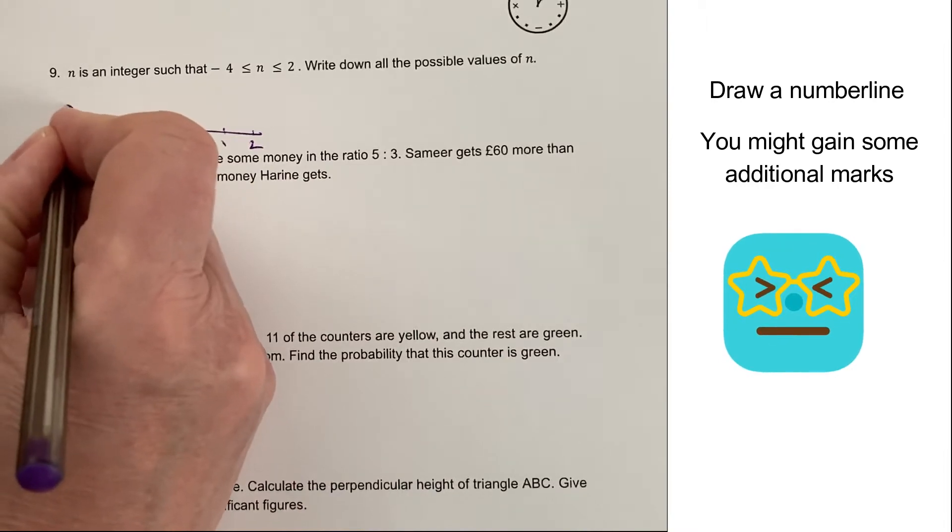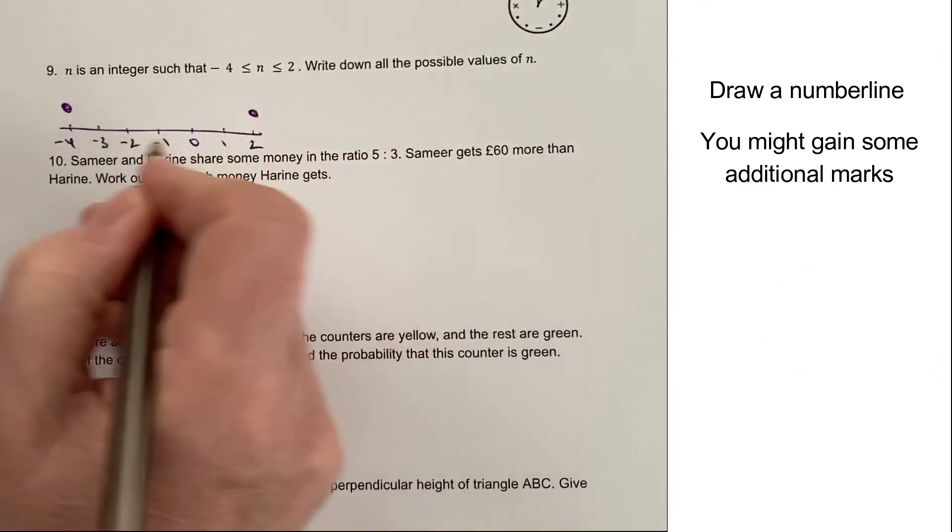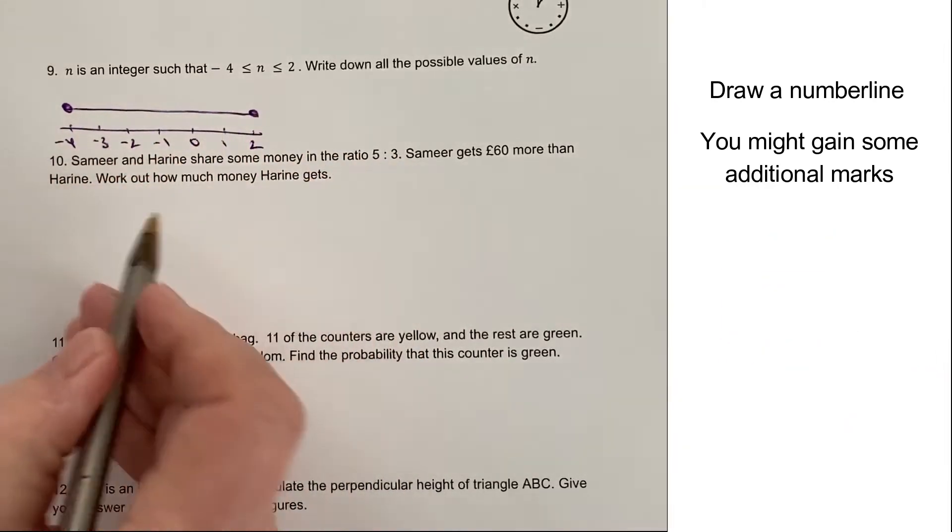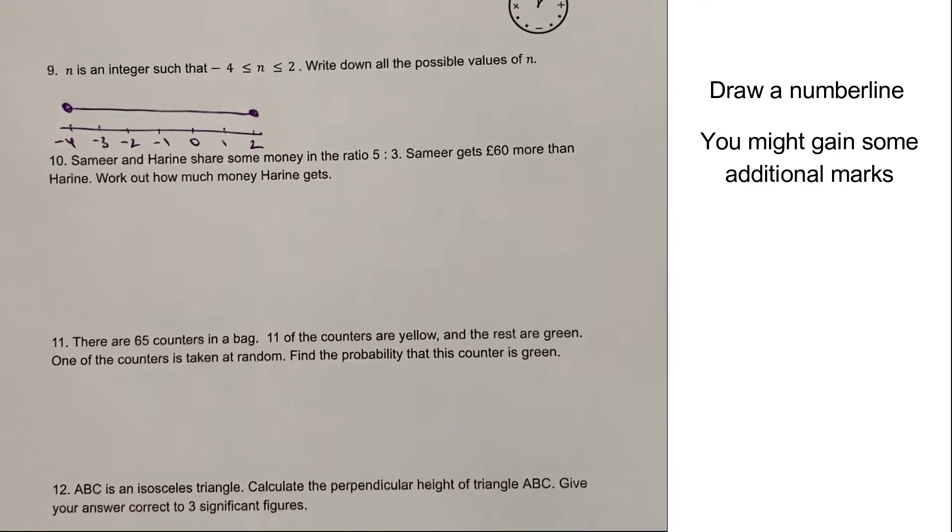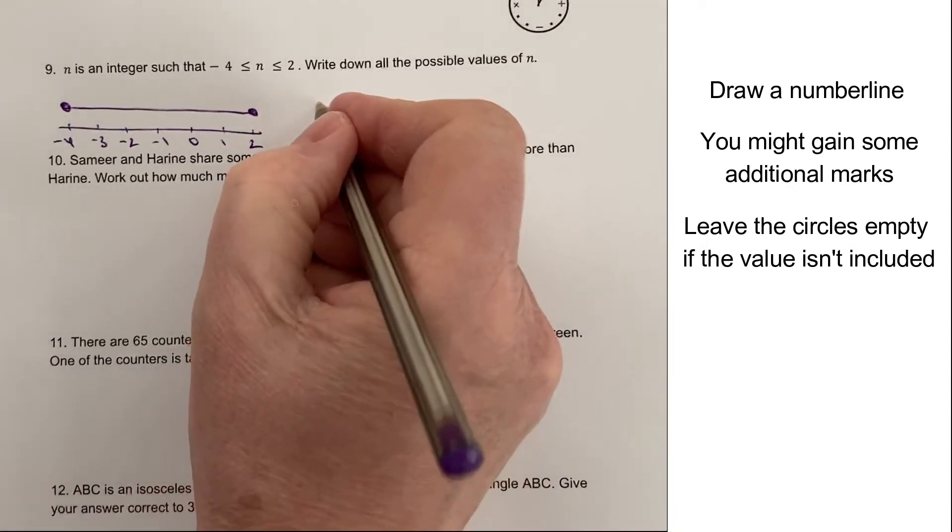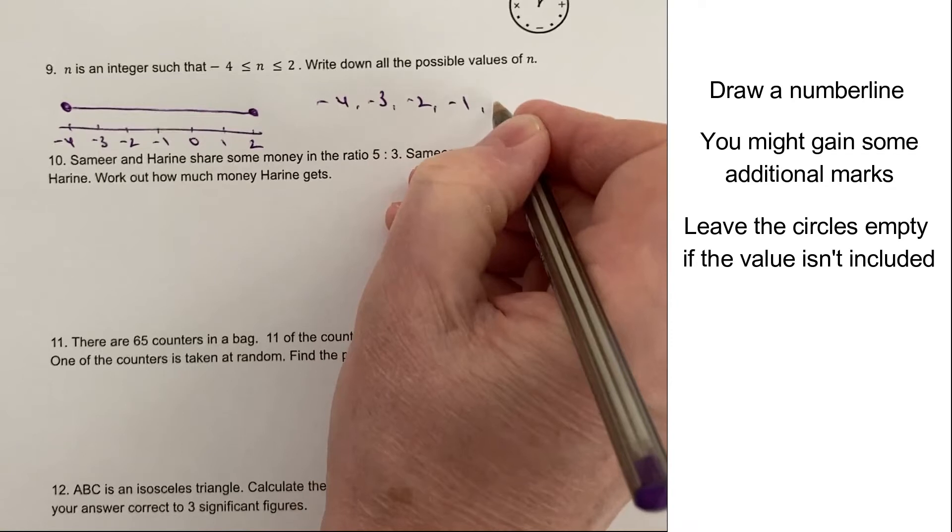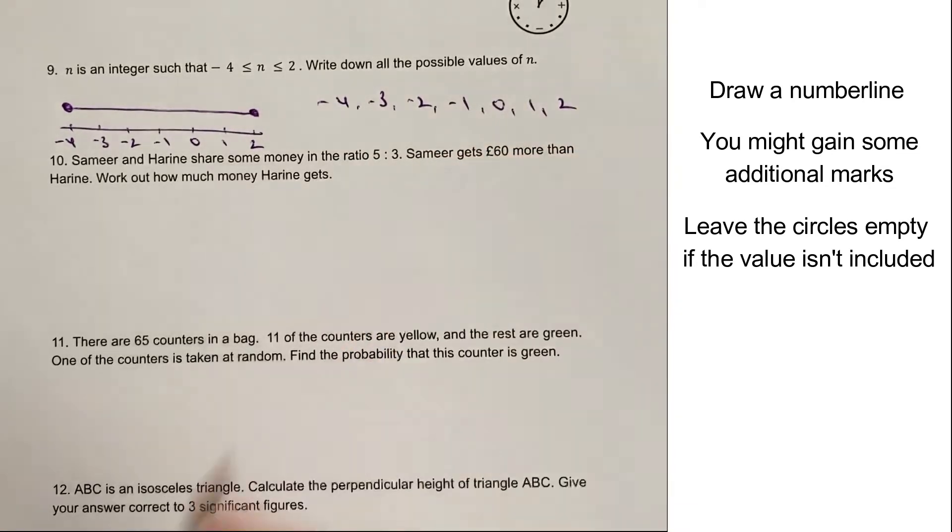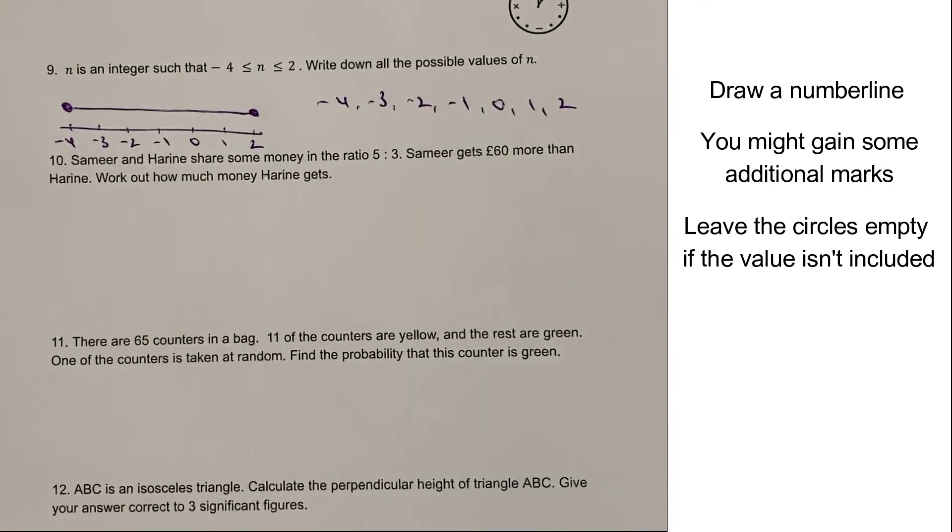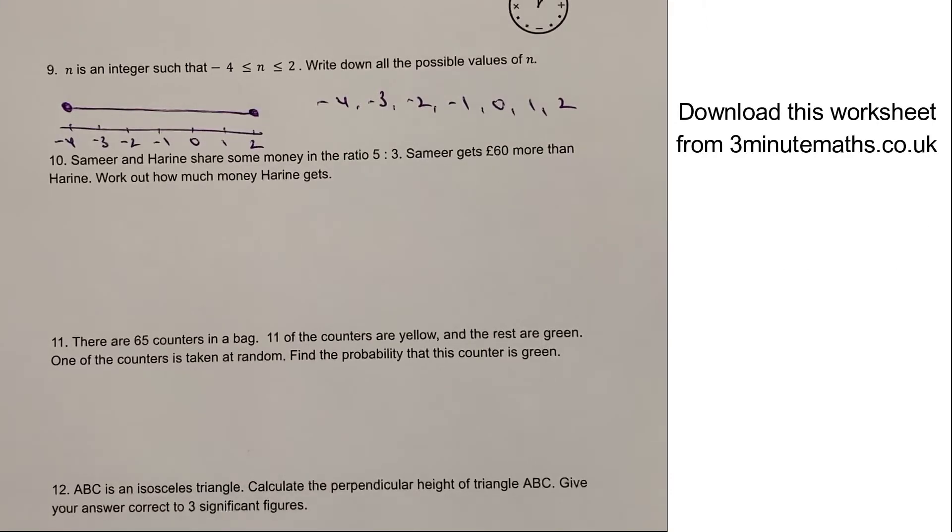And then you might recall that when you're showing inequalities, if it includes, you fill in the little circle. So in other words, what we're saying on this is the value of n could be minus four, minus three, minus two, minus one, zero, one, or two. And that would be the answer to that particular question. Let's move on then to question number 10.